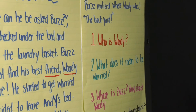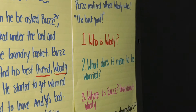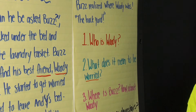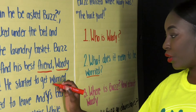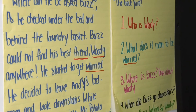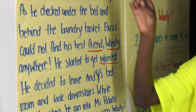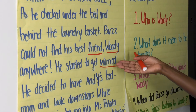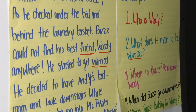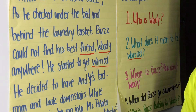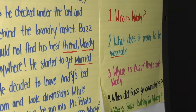Number two: What does it mean to be worried? Let's underline our key words and go back to the story to find our word. My second graders, you're going to take this a little deeper and give me synonyms — words that are related to 'worried' — and then we'll discuss. He started to get worried. Think about a time you have been worried.